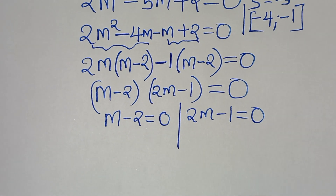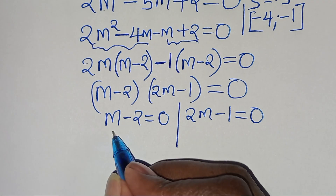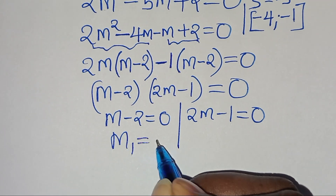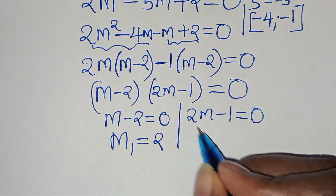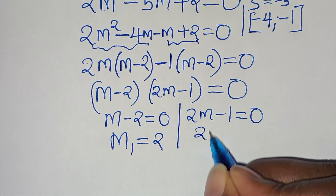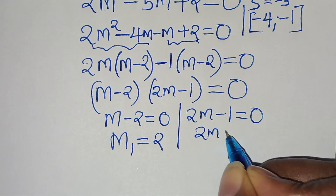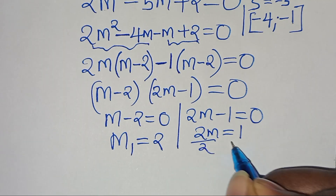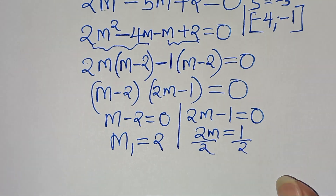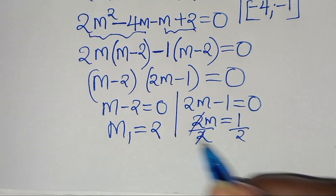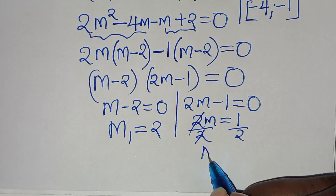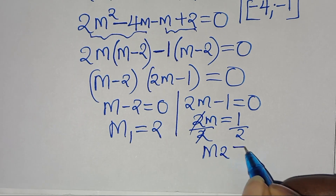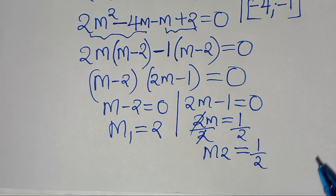So we have two parts: the first part is m minus 2 equal to 0, and the second part is 2m minus 1 equal to 0. This implies from the first part that m₁ is equal to 2, and from the second part 2m equals 1, dividing both sides by 2, m₂ equals one half.